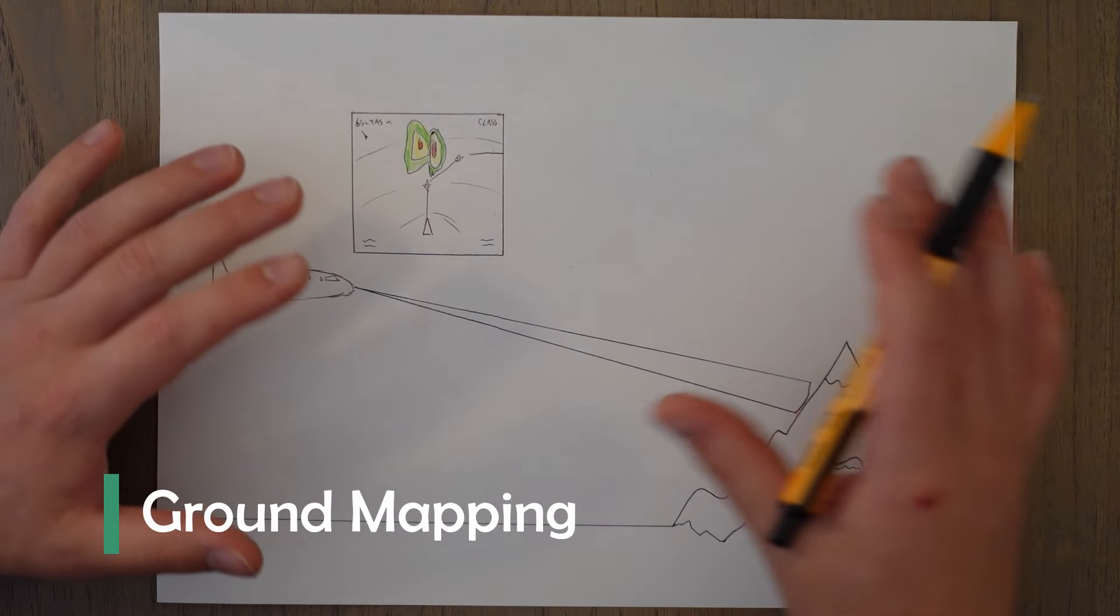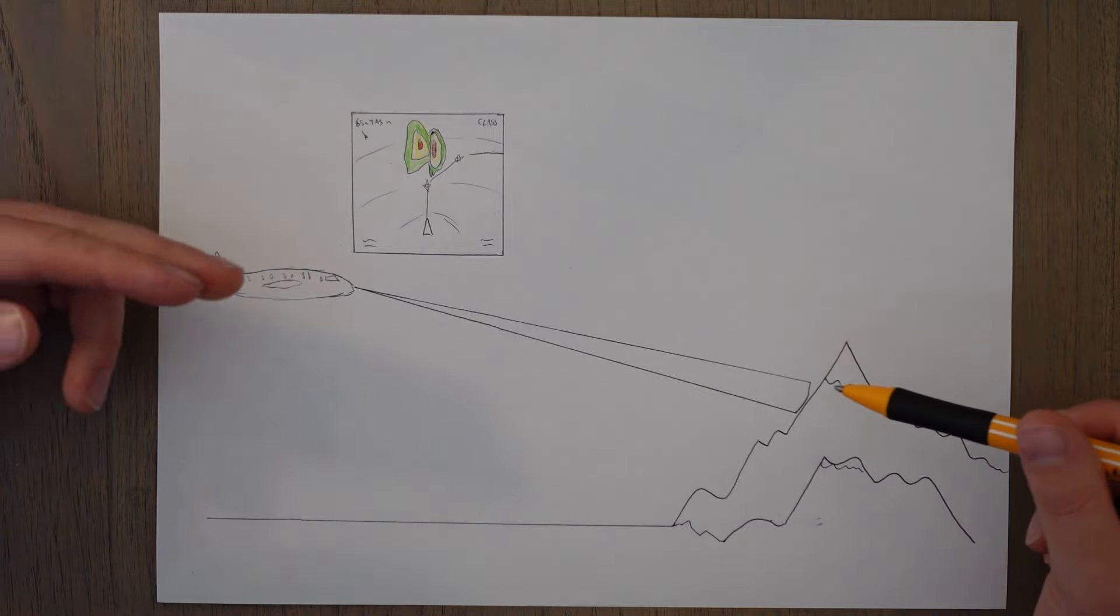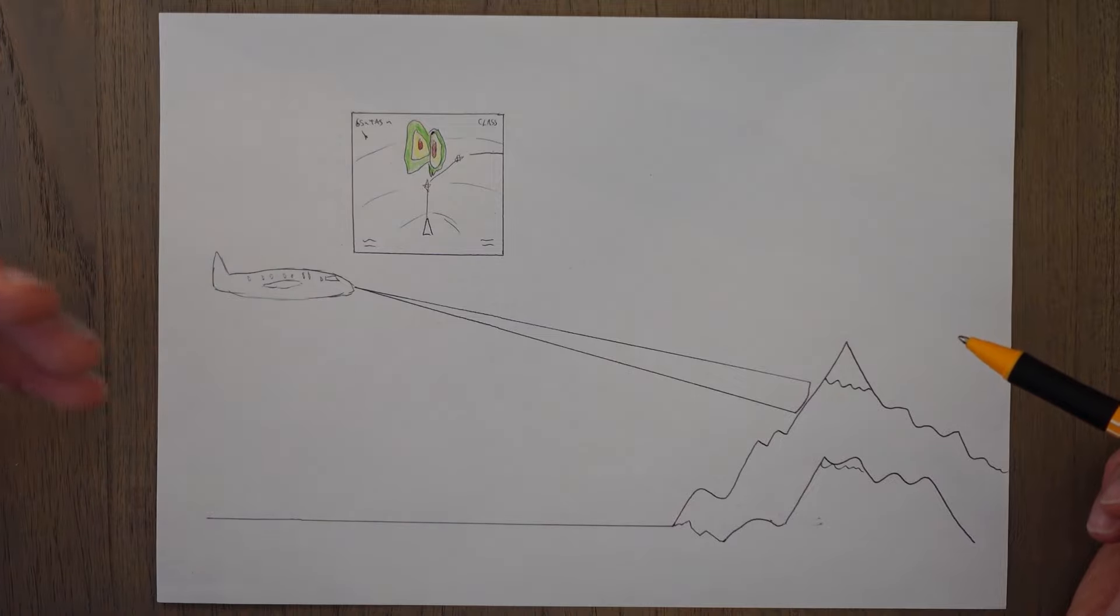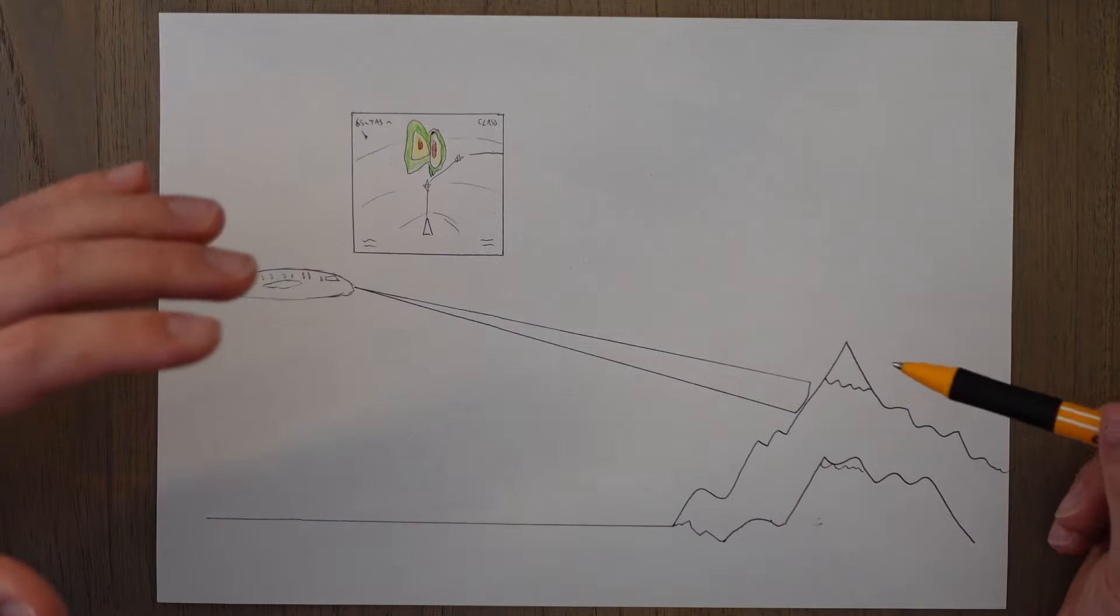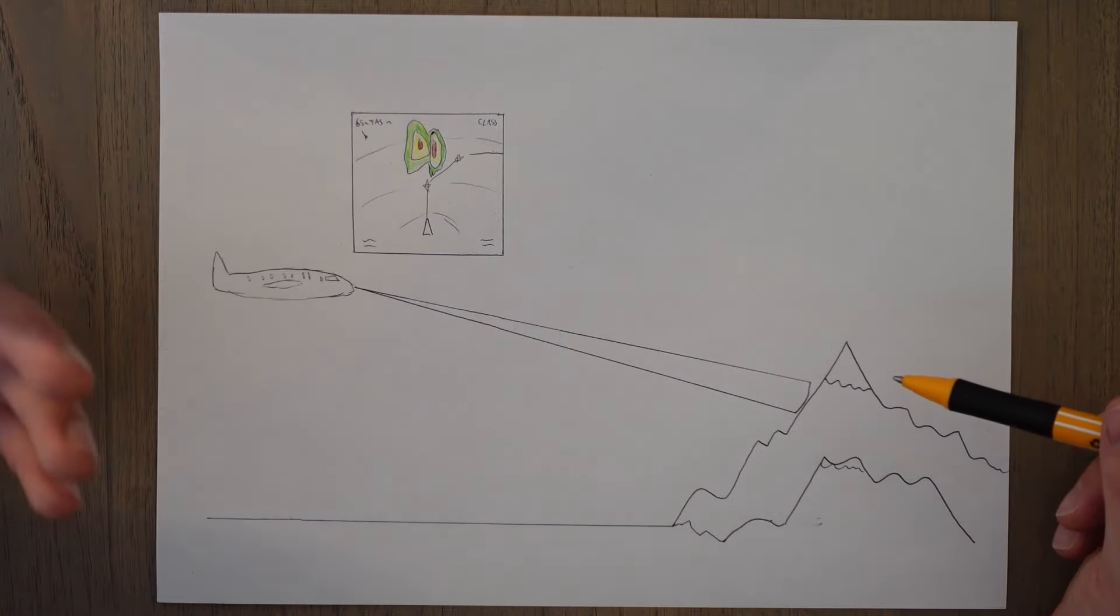A secondary use of weather radar is to use it to detect terrain instead of weather. This might be useful in a mountainous area when flying in clouds for example. It is very good for the pilots' situational awareness.